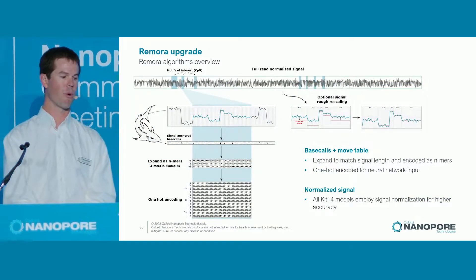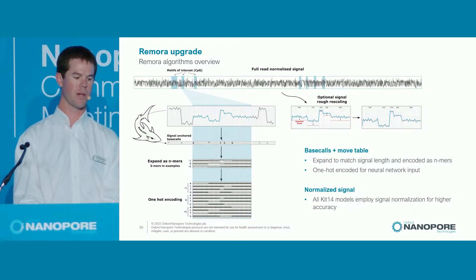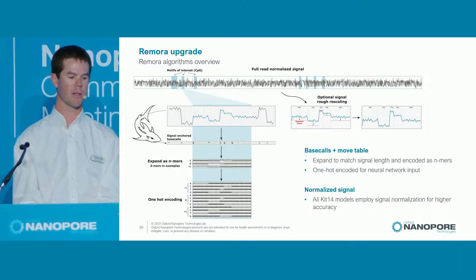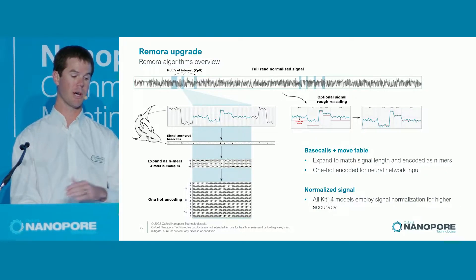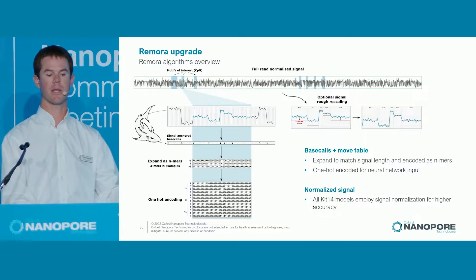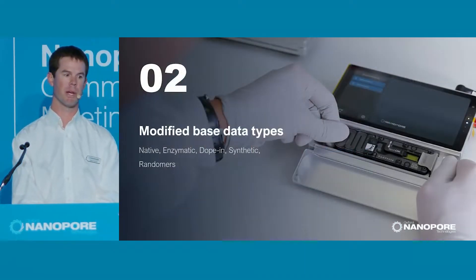How does Remora actually work internally? At the top you see a full read of signal, and we pick out little bits of signal around motifs of interest. For our main models right now, this is the CG motif. You grab the bit of signal, and then the move table and the base calls come from the base caller. You take these outputs from the base caller and pass them through a neural network to make predictions of a modified base or not.